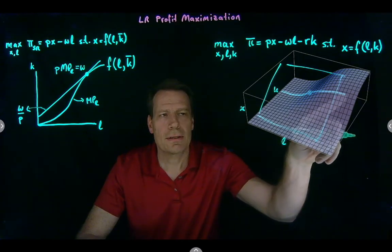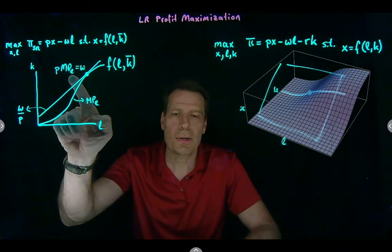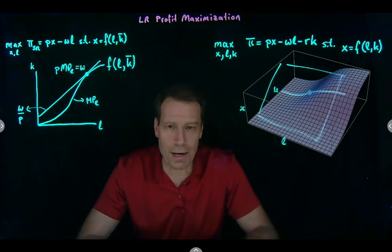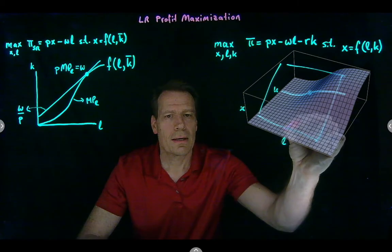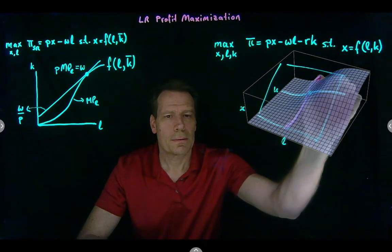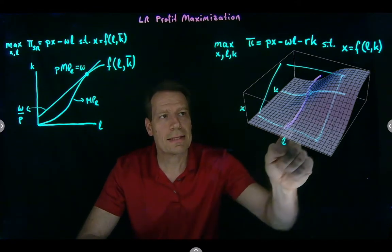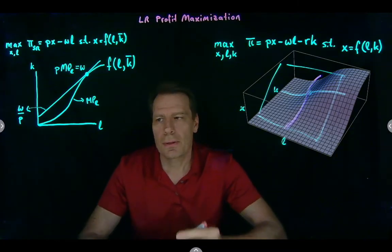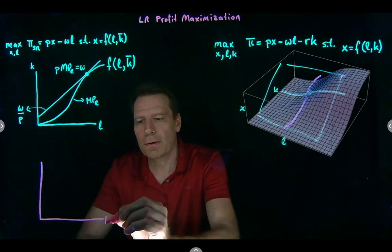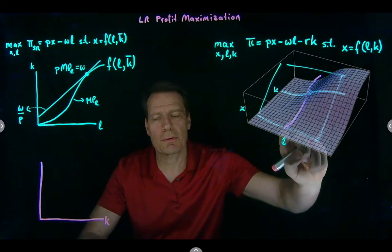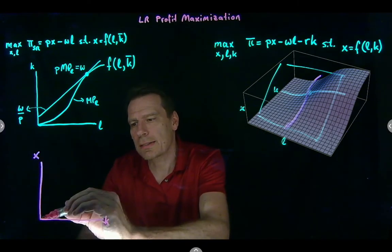The slice of that tangency that holds capital fixed still looks exactly like the short run picture, so the short run equation still holds. But now there's another slice we can take — the slice where we hold labor fixed and vary capital — and that slice also has that same shape, showing how much output we can get as we vary capital with labor held fixed.